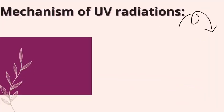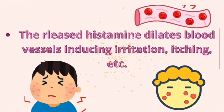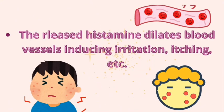What is the mechanism of UV radiations? UV radiations may penetrate the skin, inducing degeneration of the prickle layer, whereby the amino acid histidine is produced, then transferred to histamine. The released histamine dilates blood vessels, inducing irritation, itching, etc.